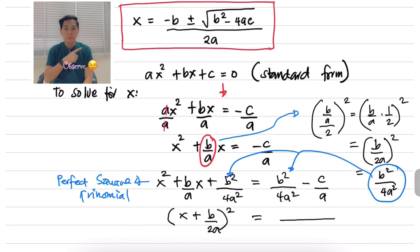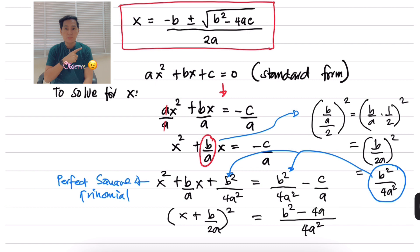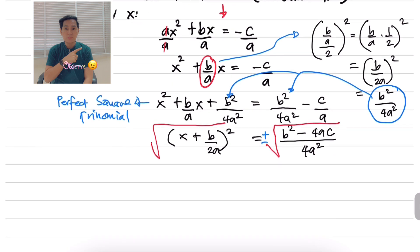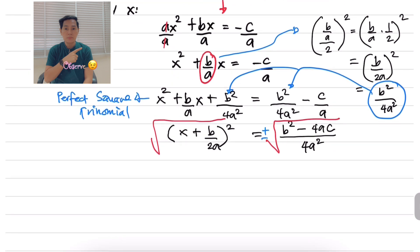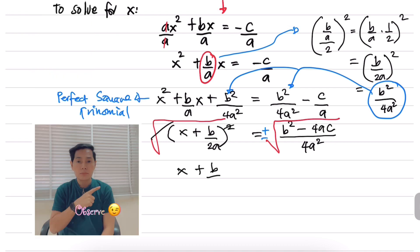Then we combine these two terms by finding the LCM or LCD. 4a squared and a gives us 4a squared, and the numerator becomes b squared minus 4ac. After which, we are going to take the square root of both sides of the equation. When you take the root, we put plus and minus, because there are two possible answers for a quadratic equation.